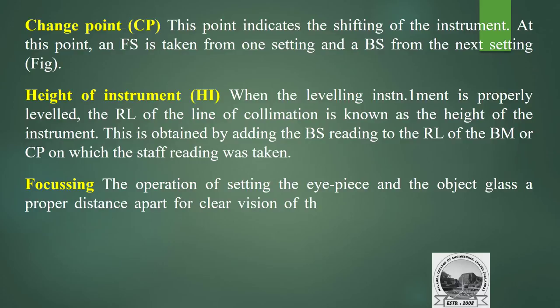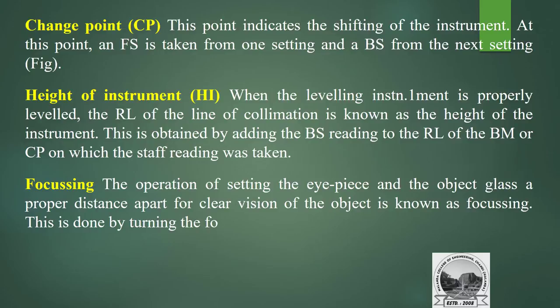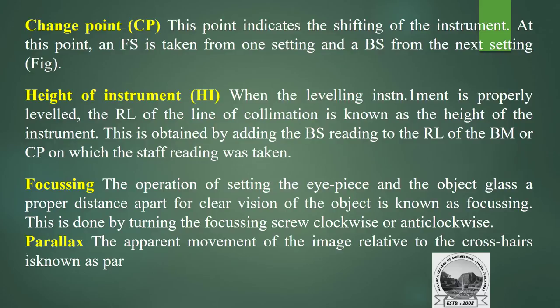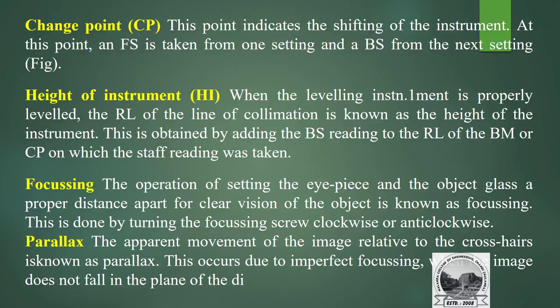Focusing: the operation of setting the eyepiece and the object glass at a proper distance apart for clear vision of the object is known as focusing. This is done by turning the focusing screw clockwise or anti-clockwise. Parallax: the apparent movement of the image relative to the crosshair is known as parallax. This occurs due to imperfect focusing when the image does not fall in the plane of the diaphragm.